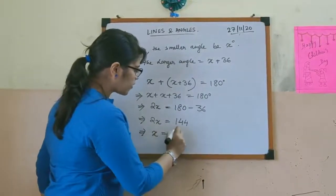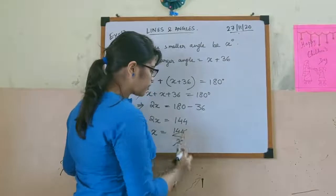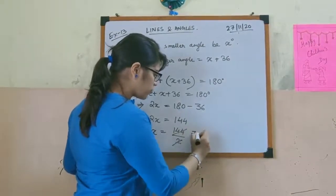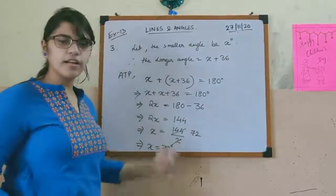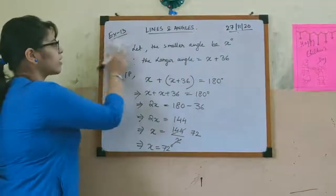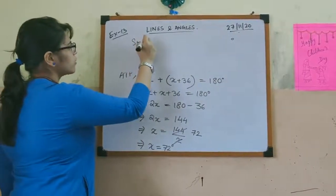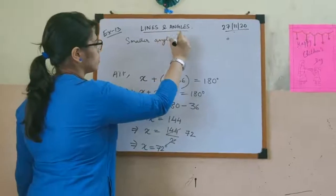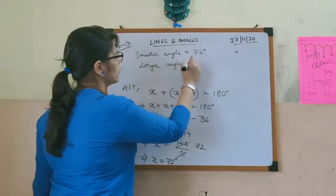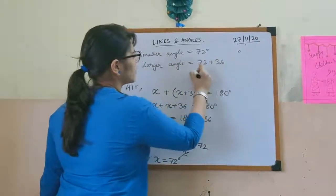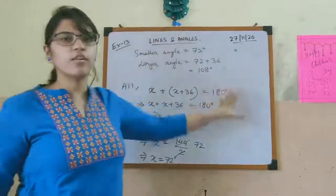So x equals 144 divided by 2, which gives x equals 72 degrees. This is our smaller angle. Therefore, the smaller angle equals 72 degrees and the larger angle equals 72 plus 36, which is 108 degrees. So these are the measures of the two angles.